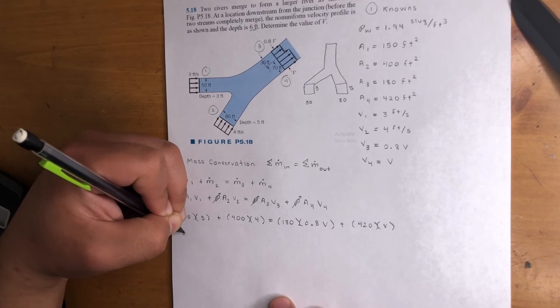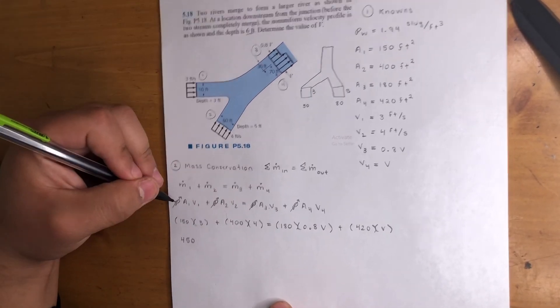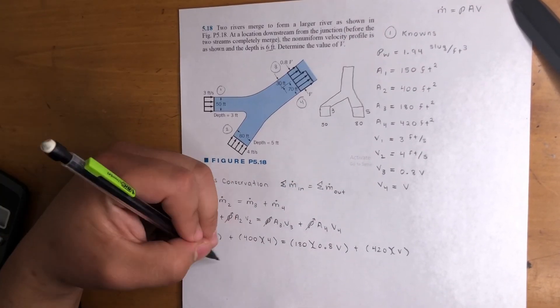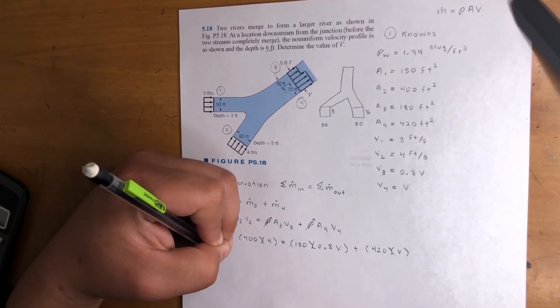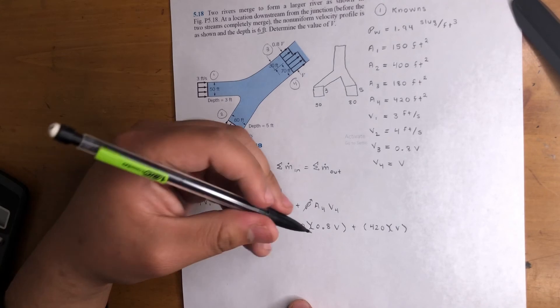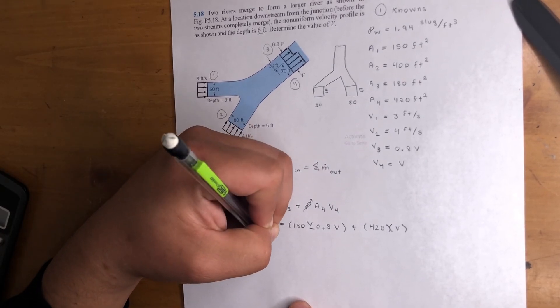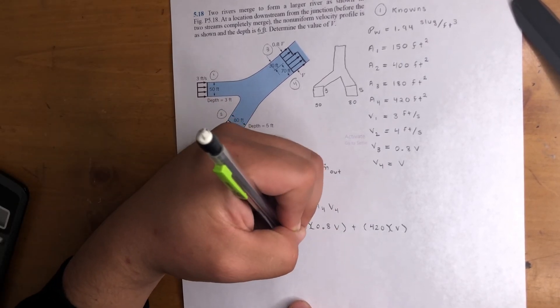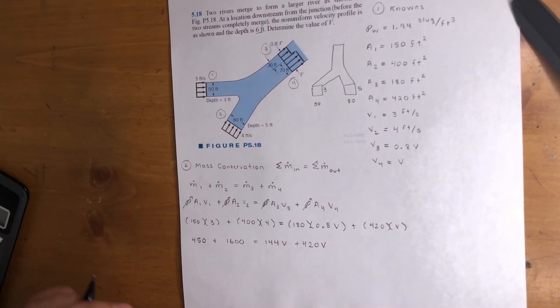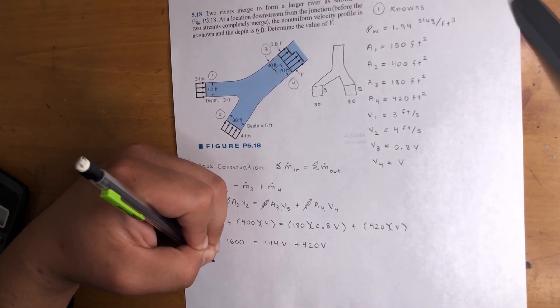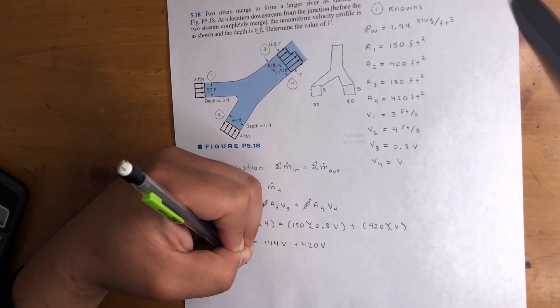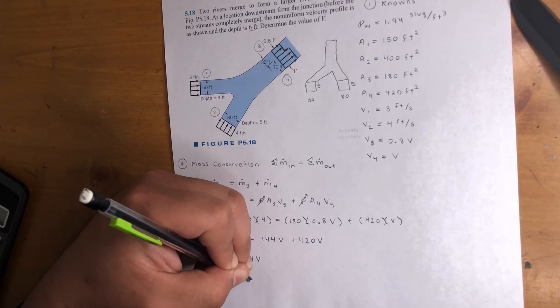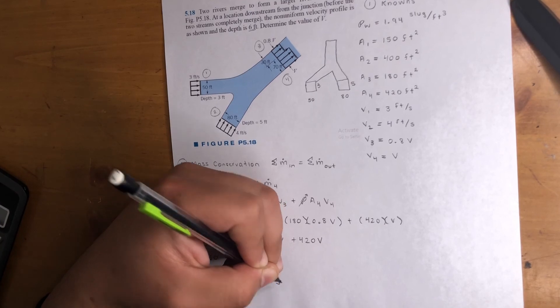150 times 3, that's 450. And since we got rid of density, these units are feet cubed per second, it's a flow rate. 450 plus 1,600, right, is equal to 144V. That's what you get if you multiply 180 times 0.8, plus 420V. Cool. So add these two numbers up, you get 2050. Add these two up, you get 564V. Finally, V is equal to 3.63 feet per second.